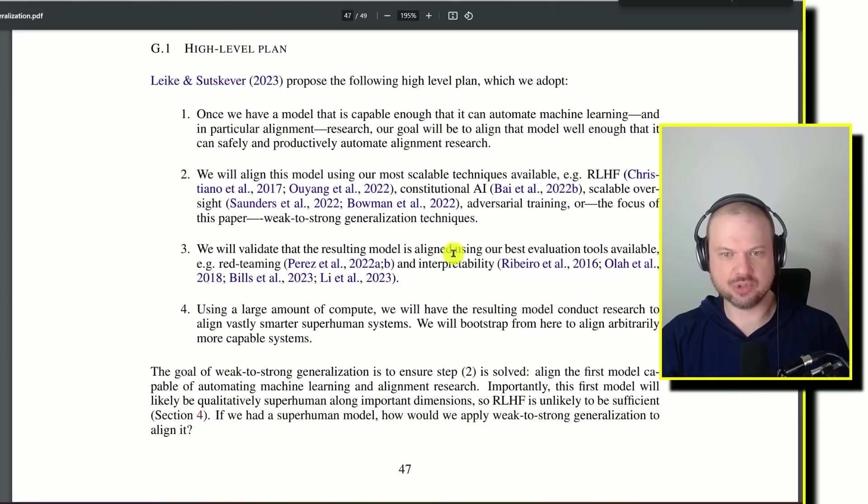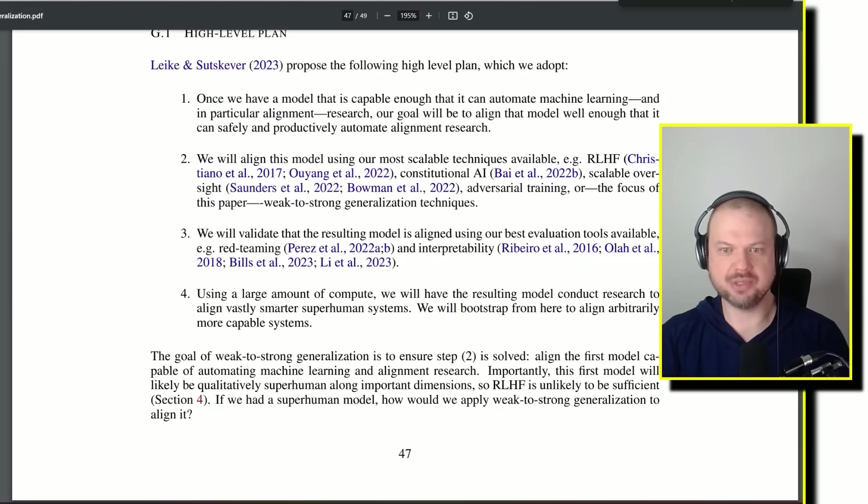We will validate that the resulting models align using our best evaluation tools available, for example, red teaming. So that's when a group of people try to do their best to try to break that model, to try to get it to do something bad, and interpretability, which is our attempt to understand what it's thinking, what its thought process are, can we monitor its quote unquote thoughts somehow?